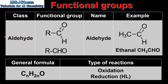Next we'll look at aldehydes. The aldehyde functional group is a carbon atom that has a double bond to an oxygen atom and a single bond to a hydrogen atom. The carbon to oxygen bond is known as a carbonyl group. The name aldehyde is the class name as well as the name of the functional group. On the right we have an example which is ethanol. Note that in the condensed structural formula the aldehyde group is written as CHO.